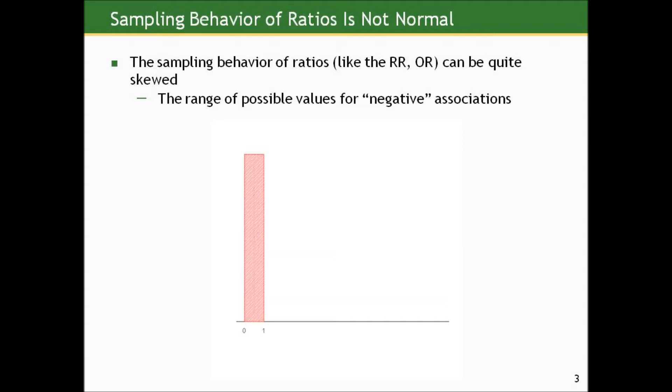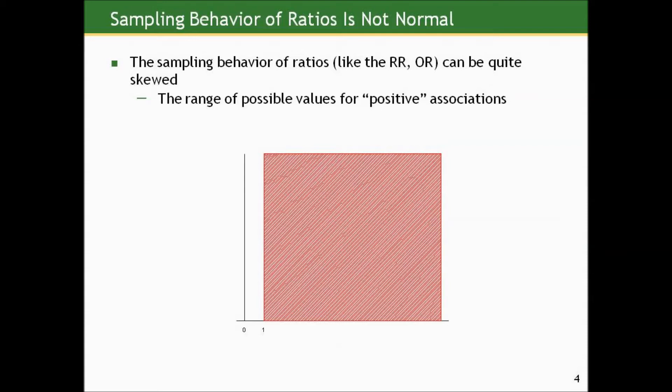And actually the closer our ratio gets to 0, the larger magnitude the log ratio becomes, but negatively so it approaches negative infinity. So in essence by taking the log of numbers between 0 and 1, which is the range for negative associations on the ratio scale, we've turned that range into the entire negative number line. And when we do the same thing for the range for positive associations on the ratio scale, between 1 and infinity, log of 1 again is 0, and that just shifts over to 0. So things that are between 1 and infinity on the ratio scale become between 0 and infinity on the log scale. So the range of possibilities for positive associations on the log scale is the entire positive number line.